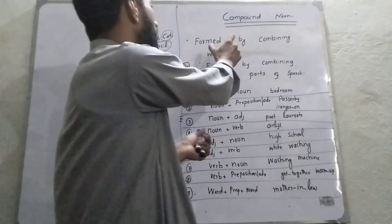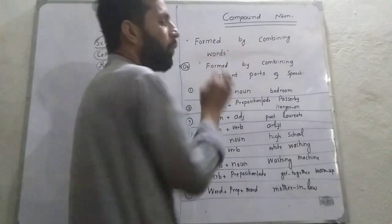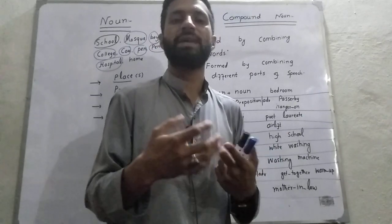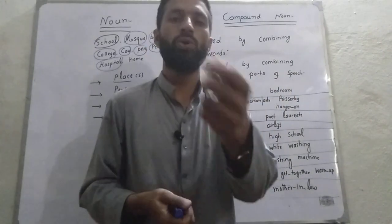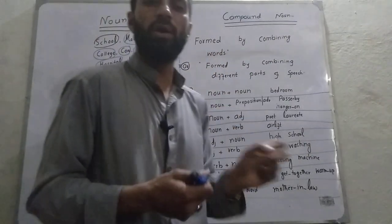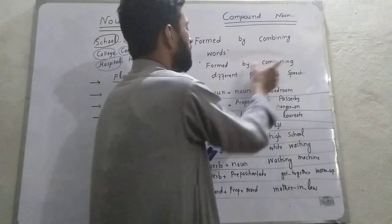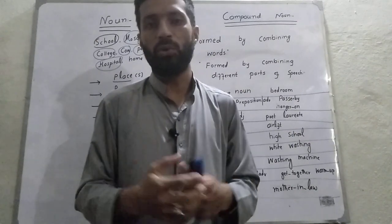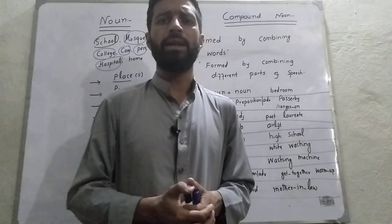I have defined compound noun in two methods. The first one is: it is formed by combining words. A noun is a word, a verb is a word, an adjective is a word, a preposition is a word — for all parts of speech we use the word 'word'. So a compound noun is formed by combining different parts of speech. When noun and noun combine, or when noun and verb combine, they form a compound noun.